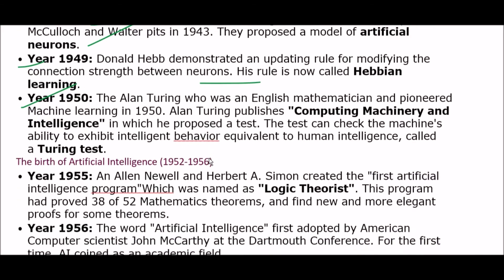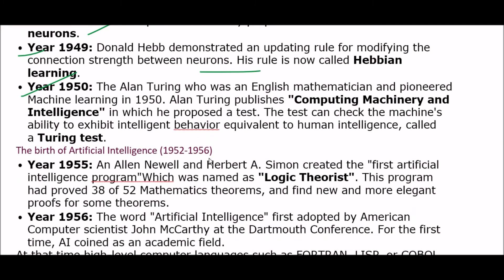In 1950, Alan Turing, an English mathematician who pioneered machine learning, published 'Computing Machinery and Intelligence,' in which he proposed a test. This test can check the machine's ability to exhibit intelligent behavior equivalent to human intelligence. This is very popular and it's called the Turing Test.